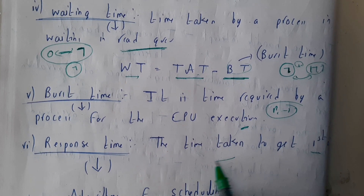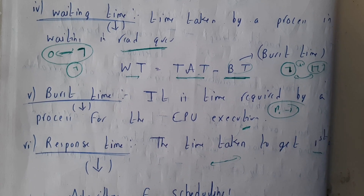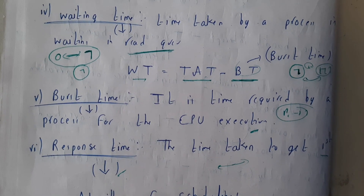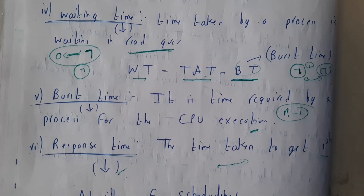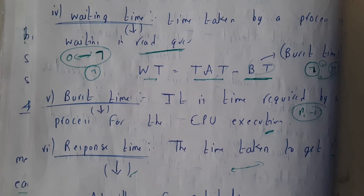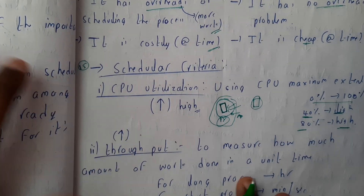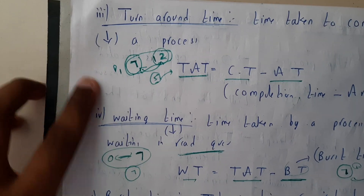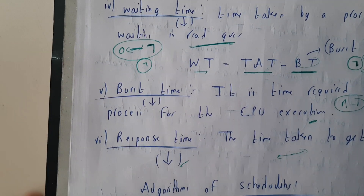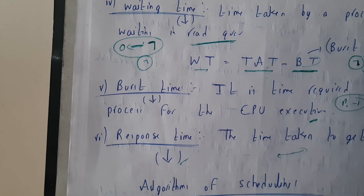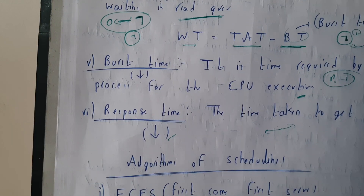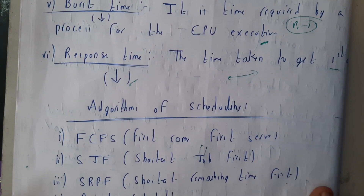Response time is the time taken to get the first response or first output from a process. To summarize: CPU utilization and throughput should be high, while turnaround time, waiting time, burst time, and response time should all be as low as possible. When these conditions are met, you can say the CPU is being utilized really well.